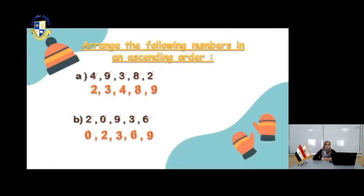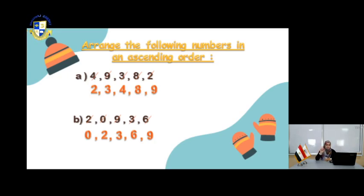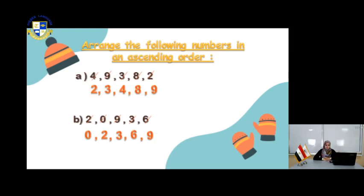In the next page, arrange the following numbers in ascending order. Ascending order means A — A for the ant — so you search for the small number. In question A, you have 4, 9, 3, 8, 2. Where is the smallest number? The ant number — yes, 2. So you cross the 2, then 3, then 4, then 8, and the last one is 9. Super. Remember, ascending means you search for the ant — for the small number.